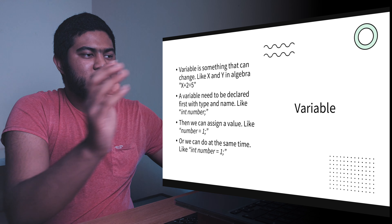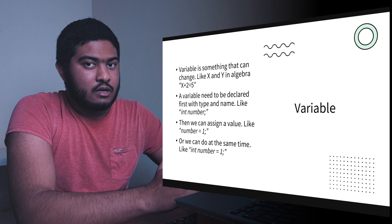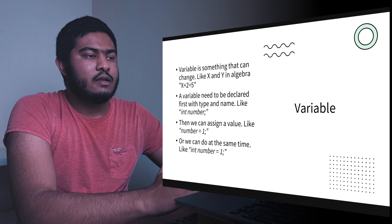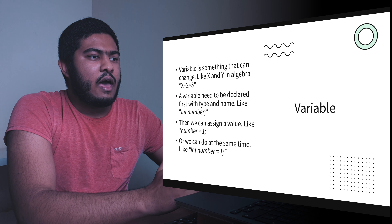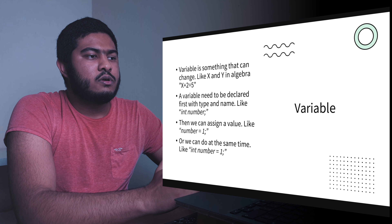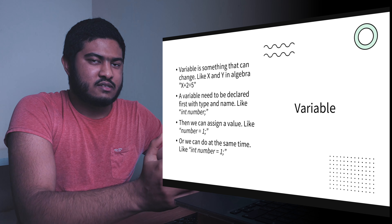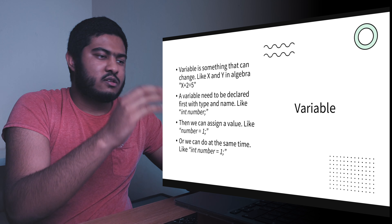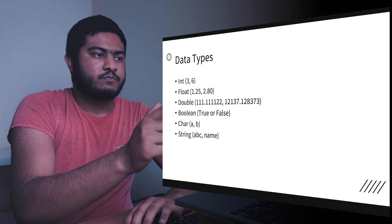So that's how you declare a variable: first declare with the data type, assign a name, then assign a value either in a next step or all at the same time.